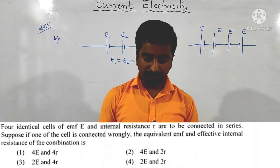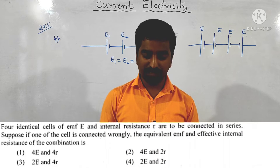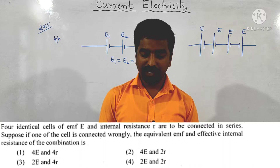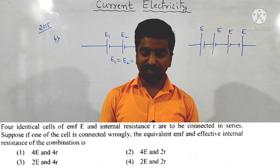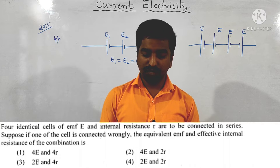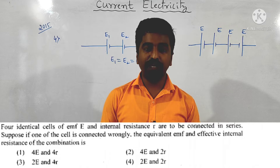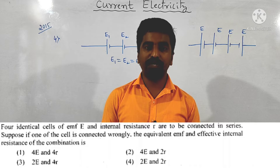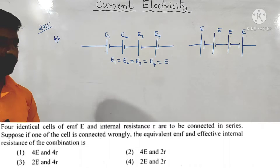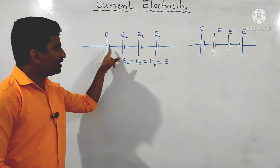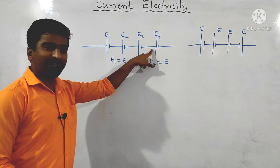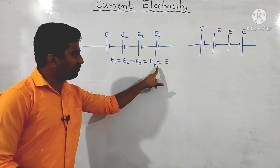Next question from the same year: 4 identical cells of EMF e and internal resistance r are connected in series. Suppose one of the cells is connected wrongly. What is the equivalent EMF and effective internal resistance of the combination? Let's move on to the solution.